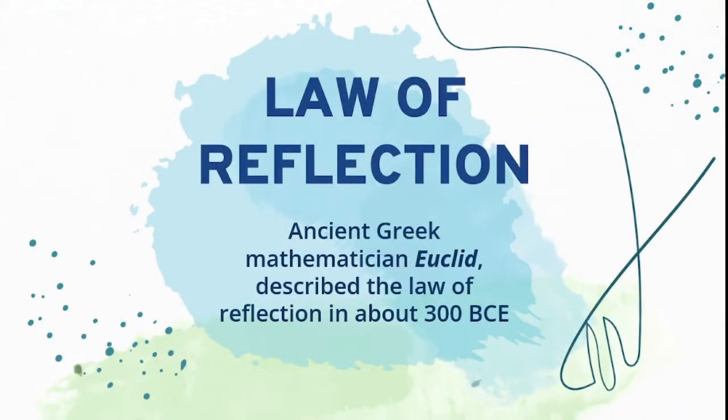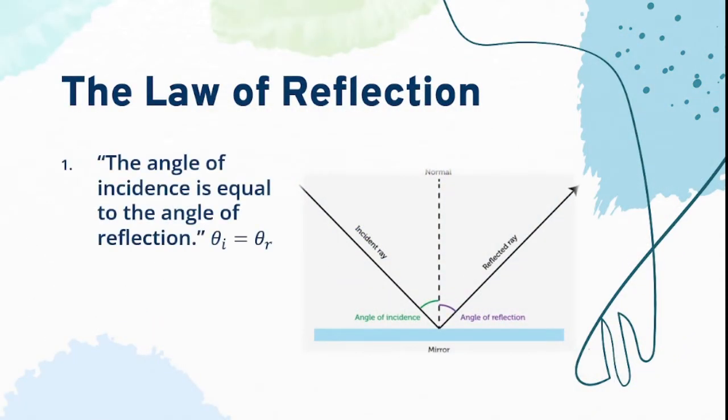The law of reflection was first introduced by an ancient Greek mathematician Euclid in 300 BCE. The law of reflection states that first, the angle of incidence is equal to the angle of reflection. So if the angle of incidence is measured 30 degrees relative to the normal line, therefore the angle of reflection is also measured 30 degrees relative to the normal line.